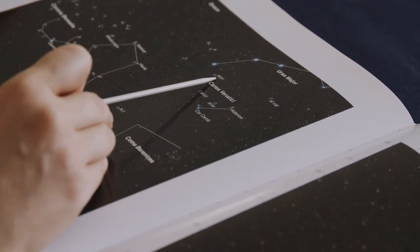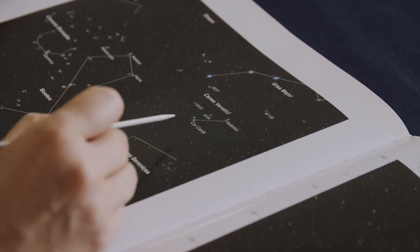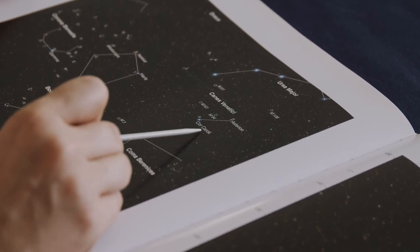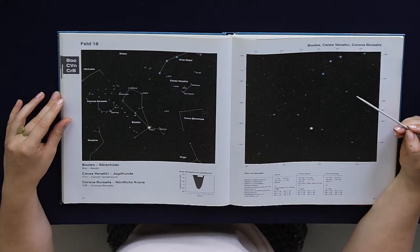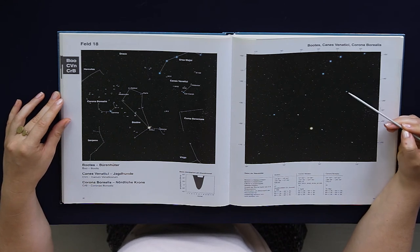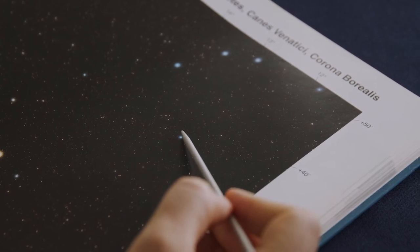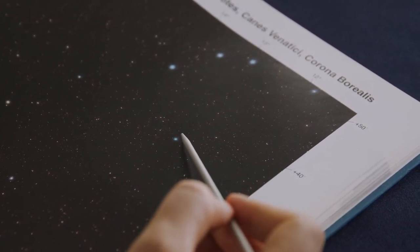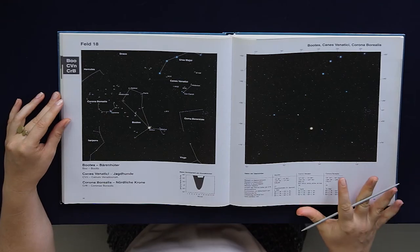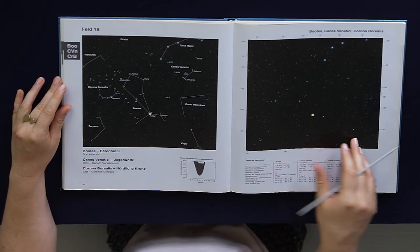Canes Venatici - Canis are the dogs. The star is called Cor Caroli. If you know a little bit of Latin, you might know Cor is the heart - it's the heart of Charles. It's right here, one, two. And this is a bit of a later invention. In fact, this was named Cor Caroli in 1649 after Charles I, King of England. He also wanted a place among the stars.